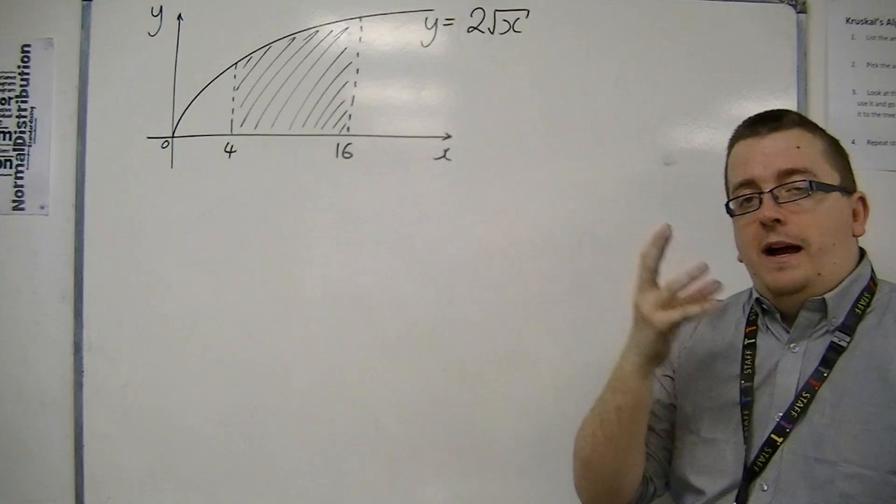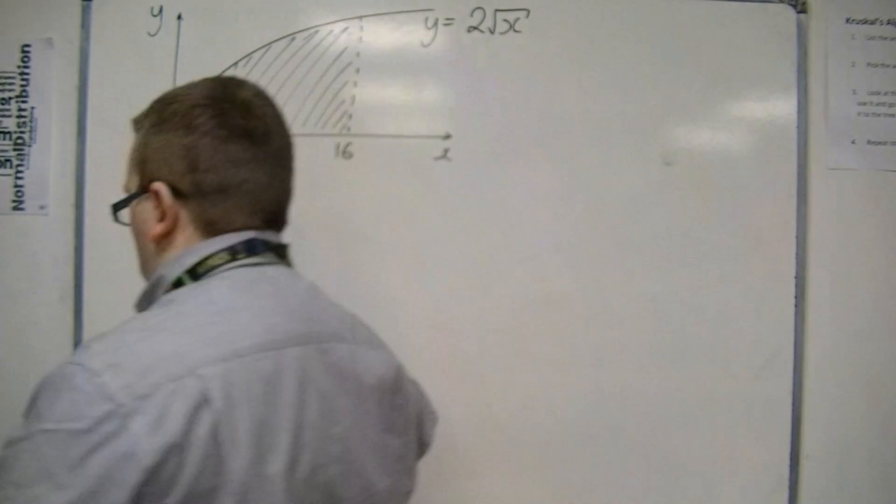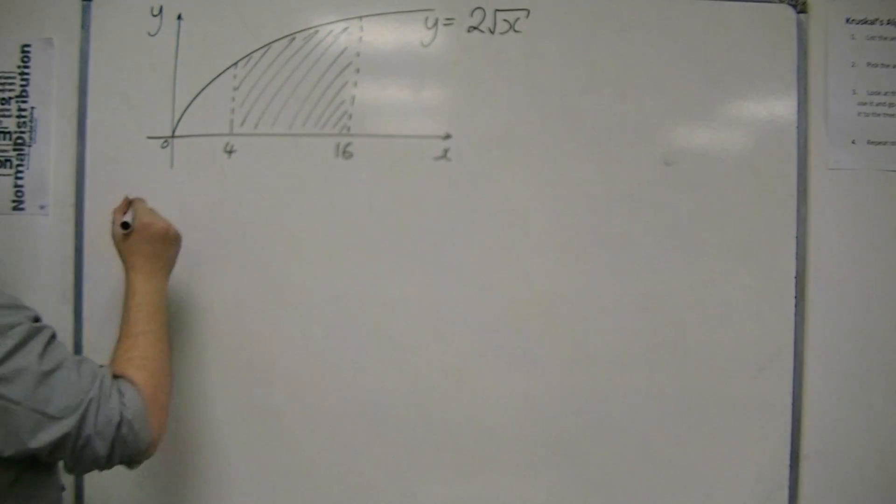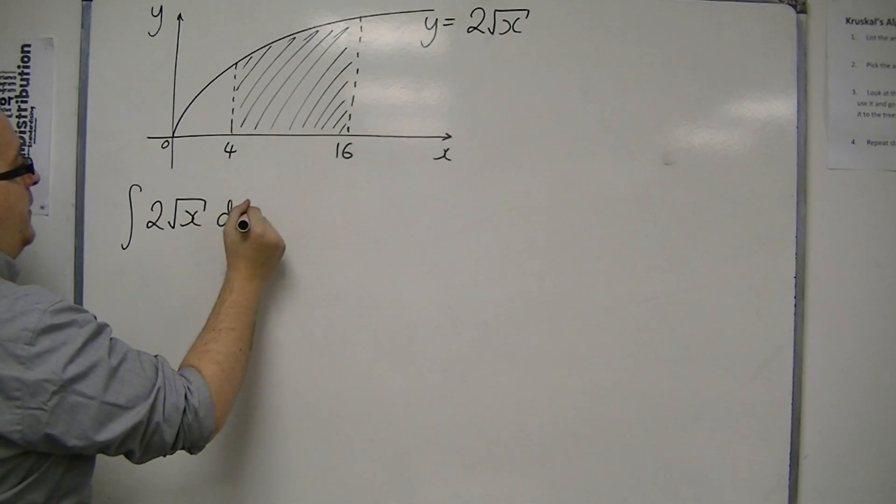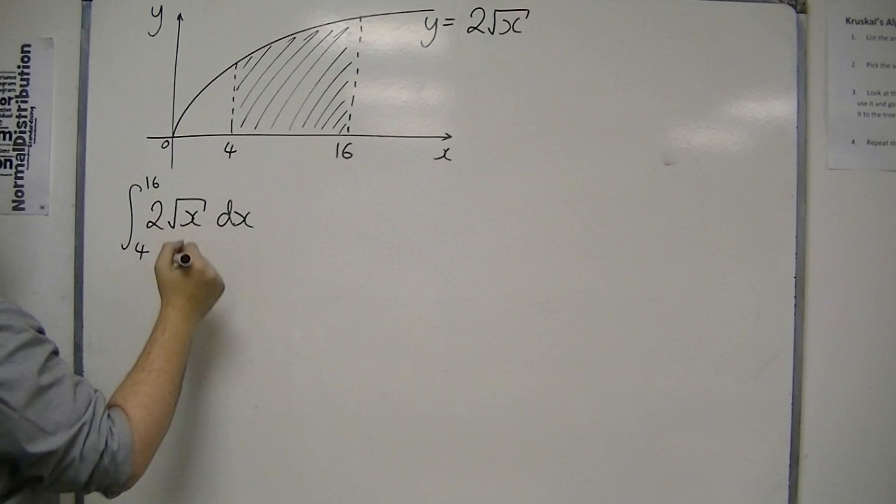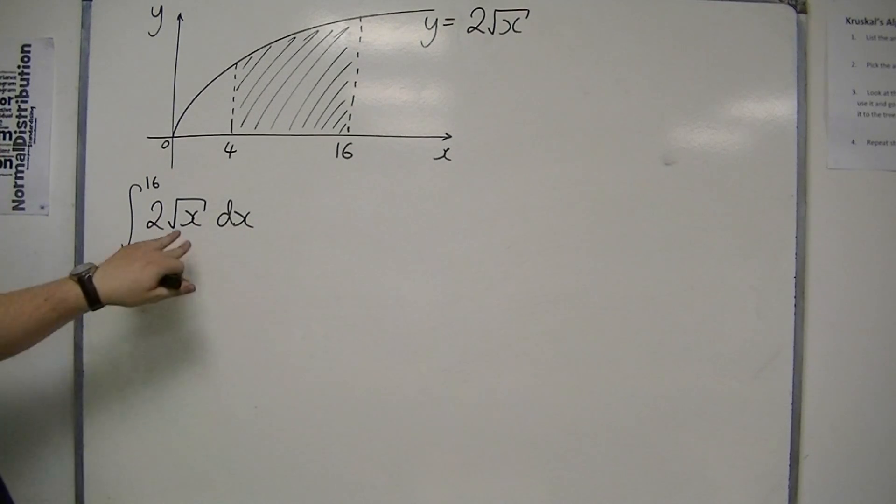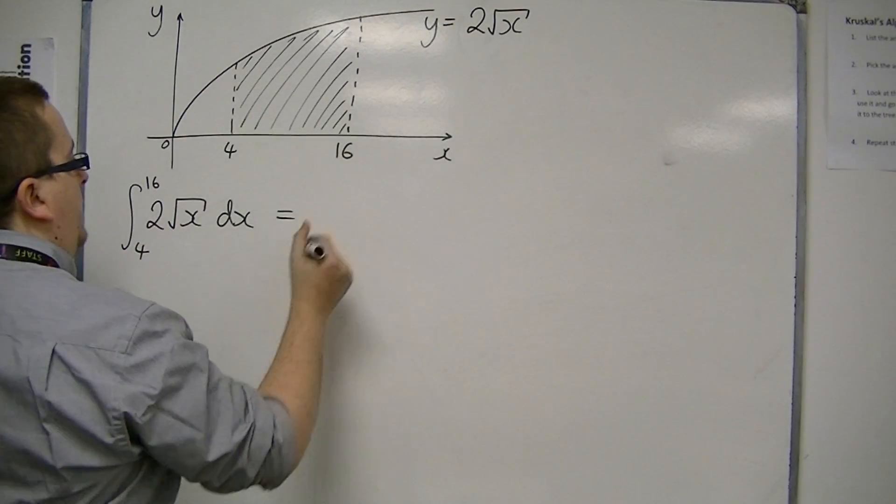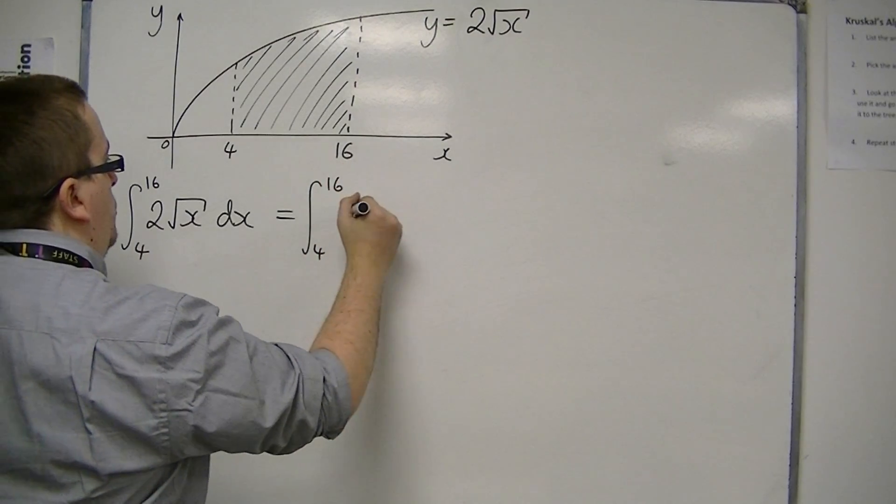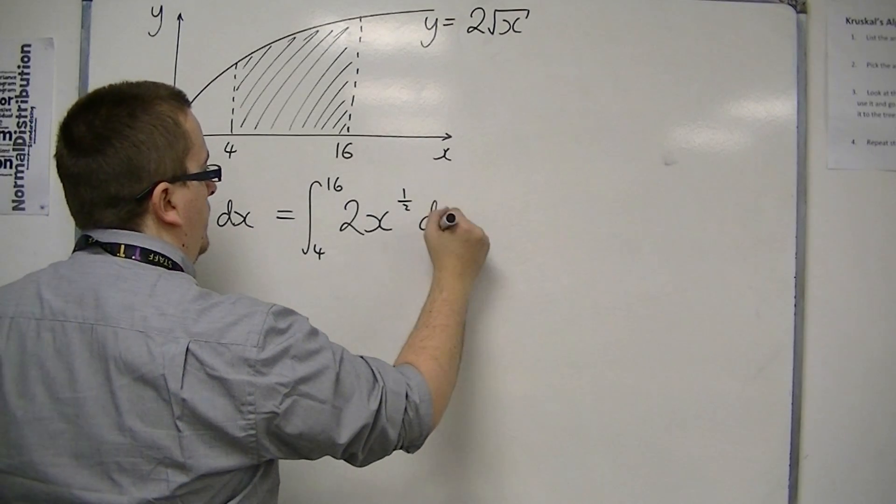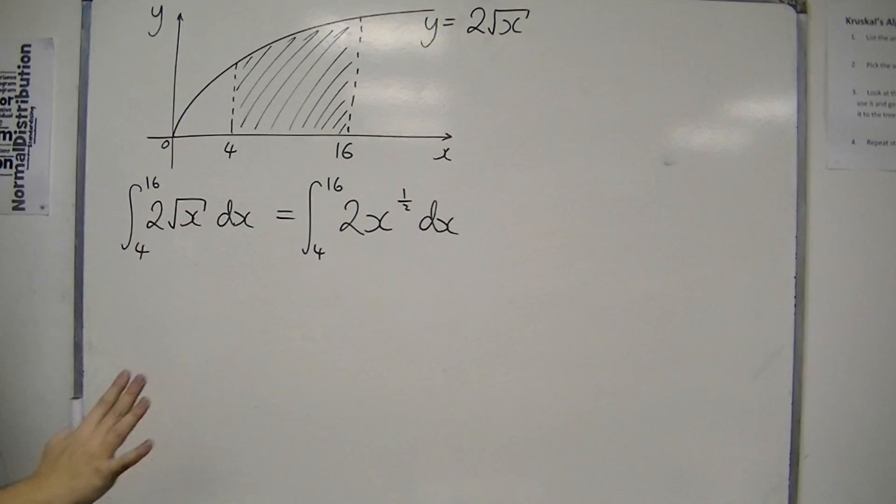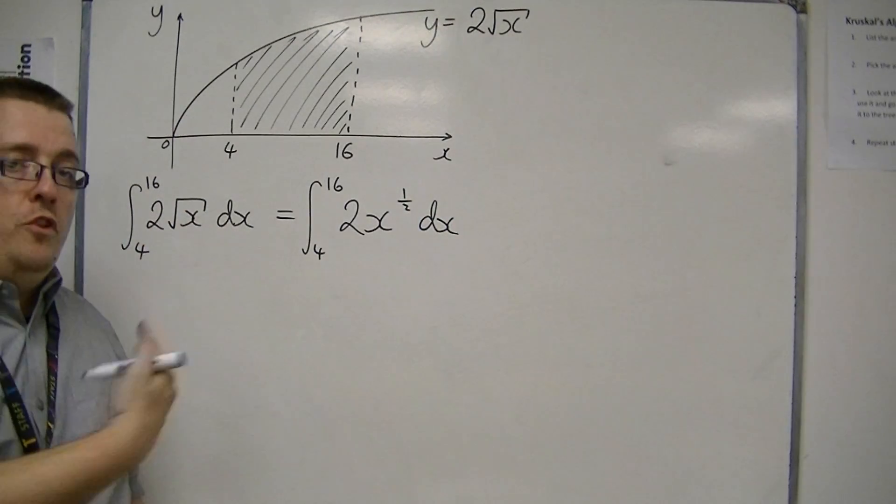So we're going to have to deal with fractional and negative indices. If I'm going to integrate 2 root x dx between 4 and 16, then I must first write 2 root x as x to the something, as a power of x. This is 2 lots of x to the half. Root x is x to the half, so that's quite straightforward to do.